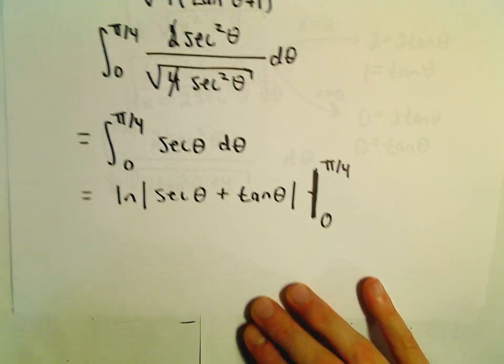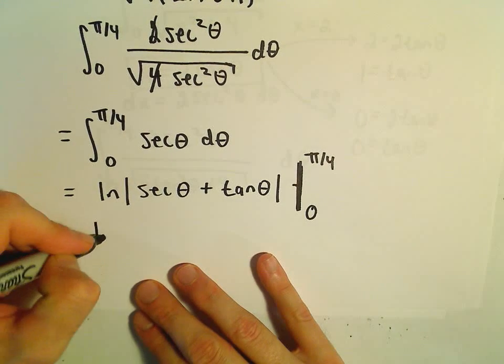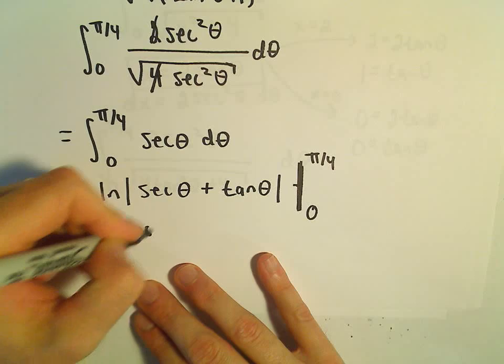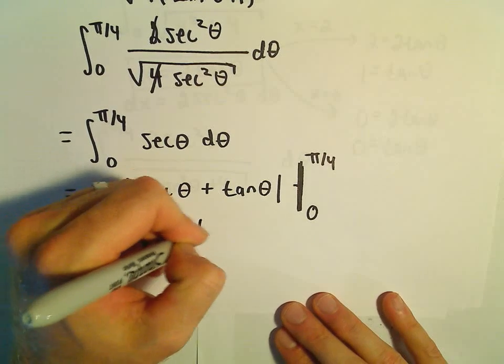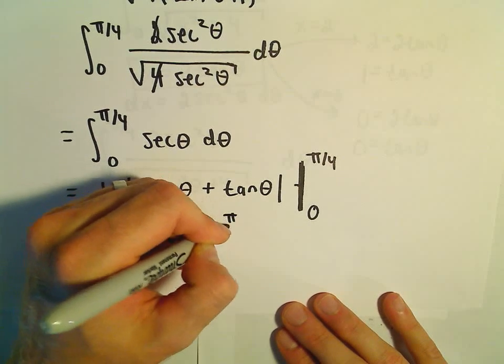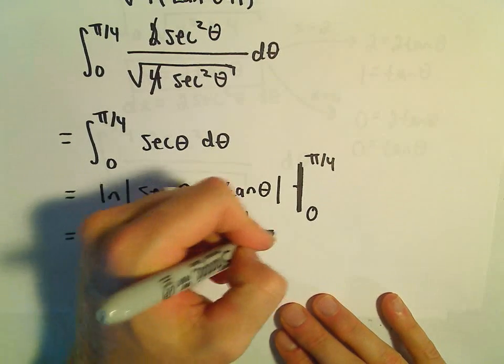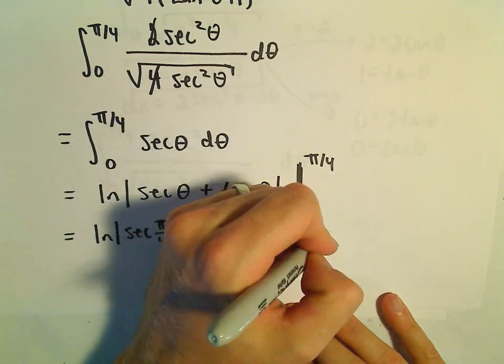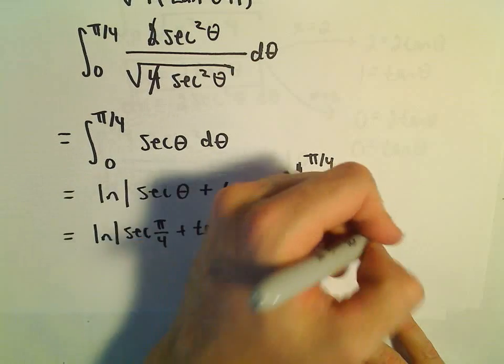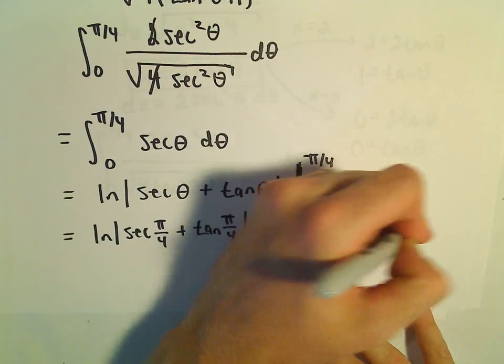Now we evaluate: ln|sec(π/4) + tan(π/4)| minus ln|sec(0) + tan(0)|.